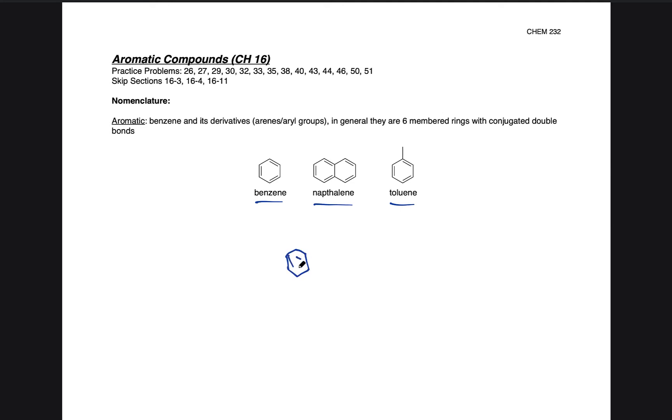Anthracene is when we have three of these aromatic groups fused together. And we can build these out longer and longer too, these aromatic groups, to get polyaromatic hydrocarbons. These are long aromatic chains.